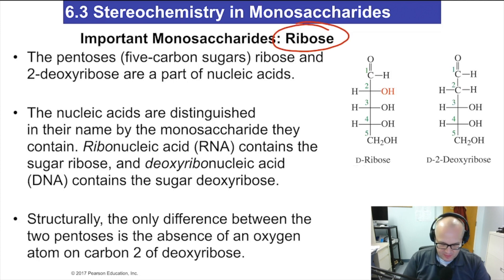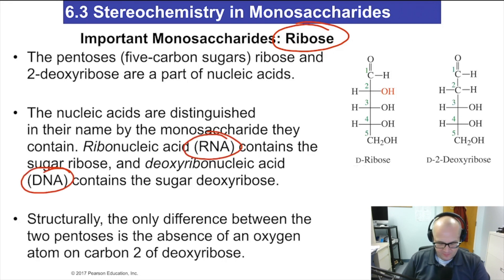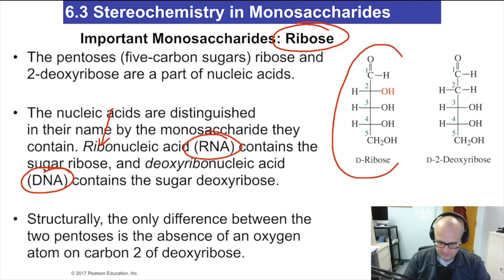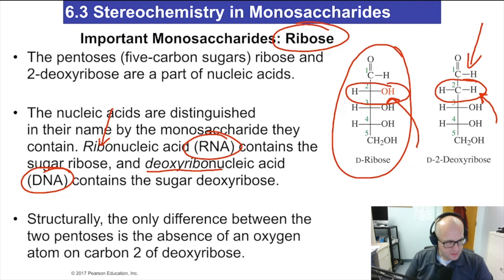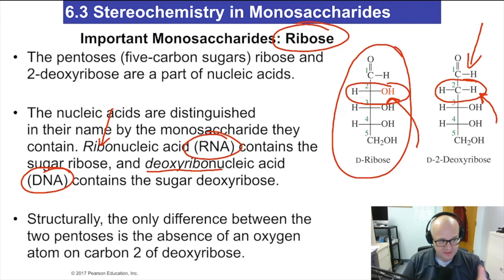Ribose is a very important sugar you'll want to remember because of its prevalence in DNA and RNA. Note the prefix 'ribo' in ribonucleic acid — RNA contains ribose. DNA is deoxyribonucleic acid, meaning deoxyribose. Notice carbon 2 in ribose has an OH group, whereas in deoxyribose that OH has been replaced by a hydrogen. So our DNA literally has a bunch of sugar in it — pretty cool.